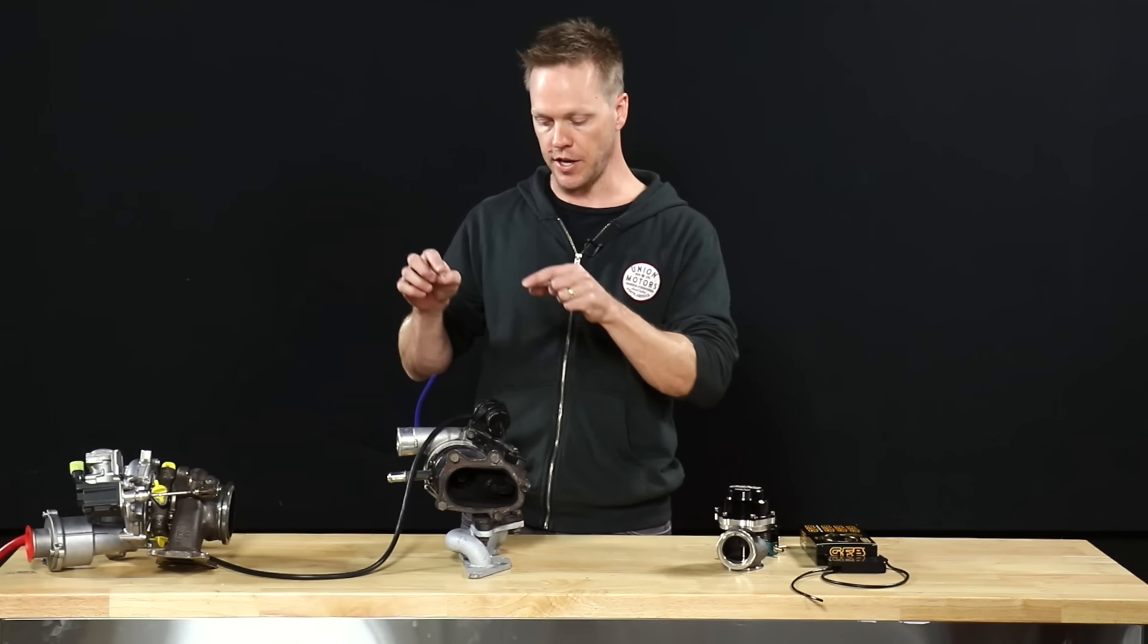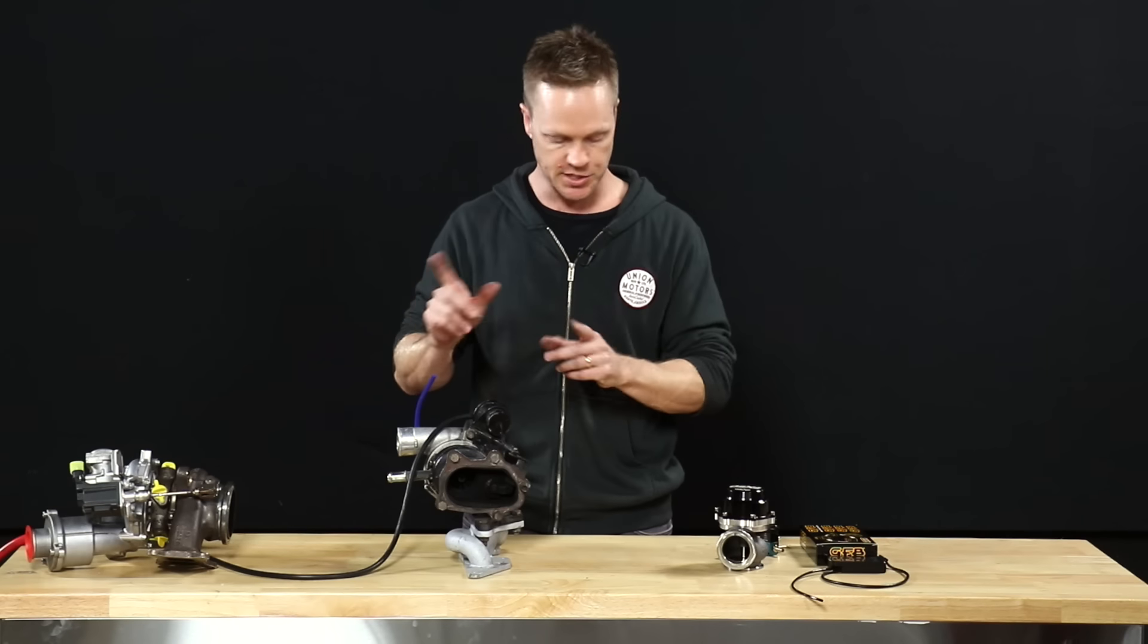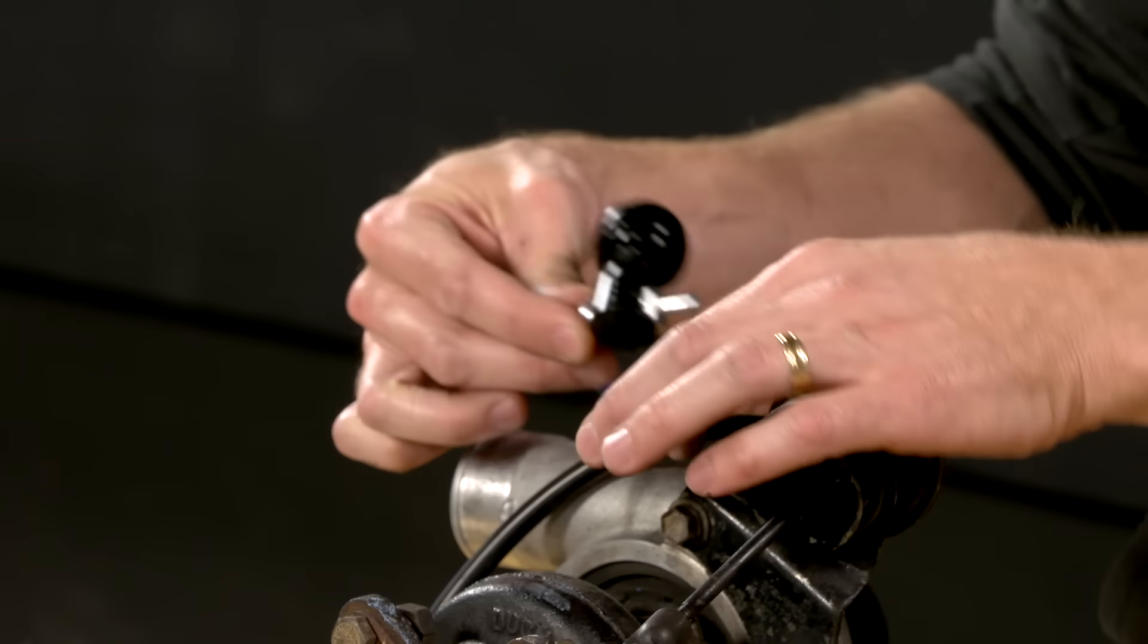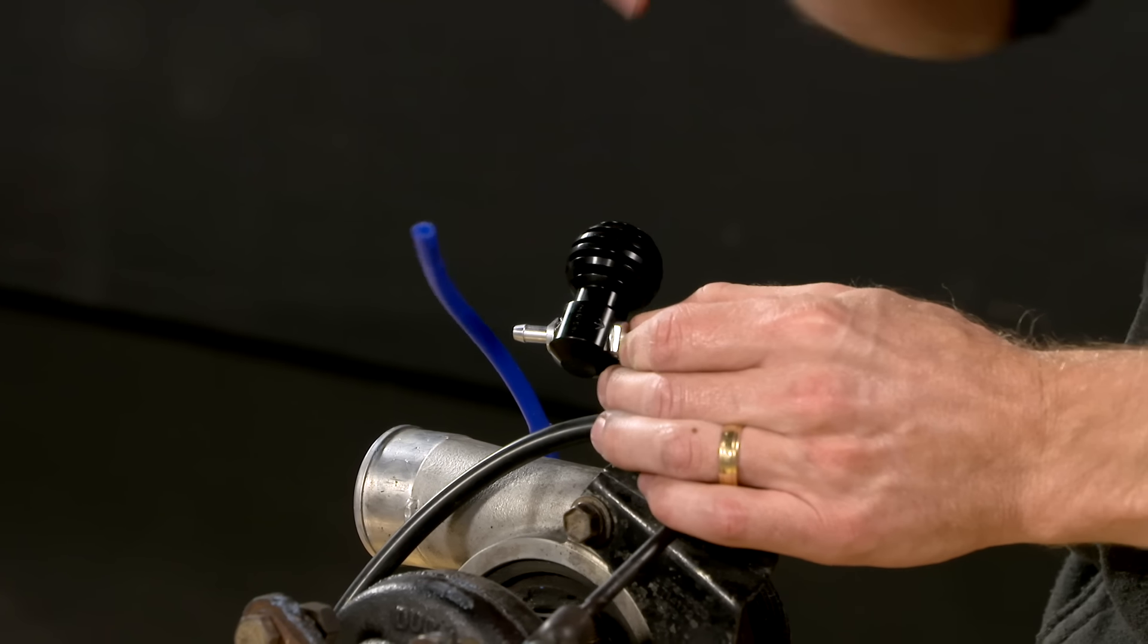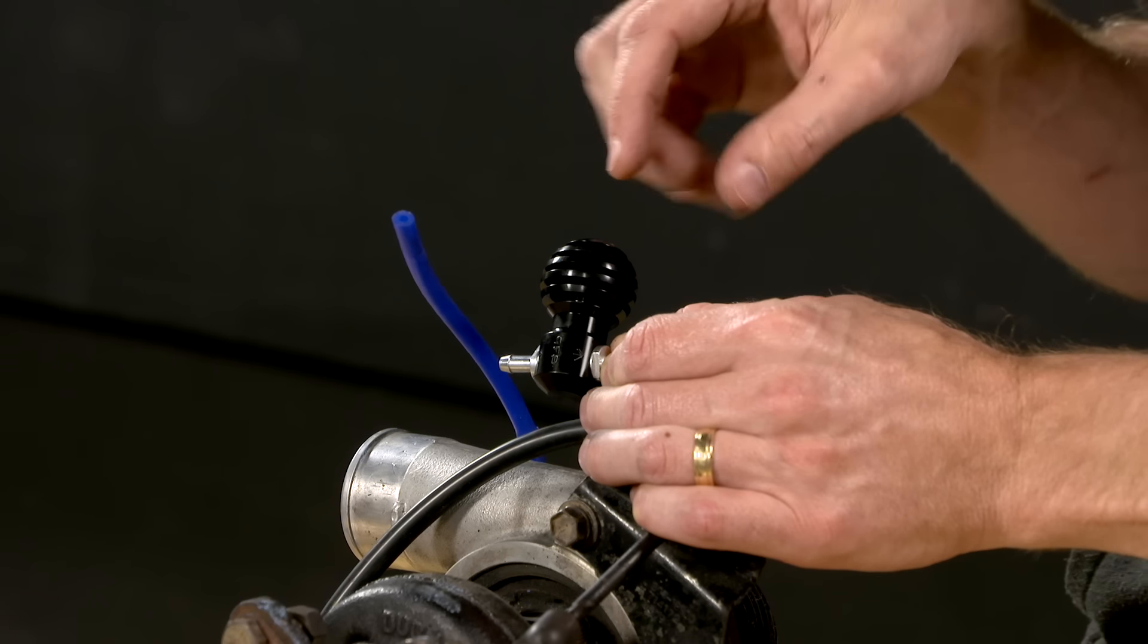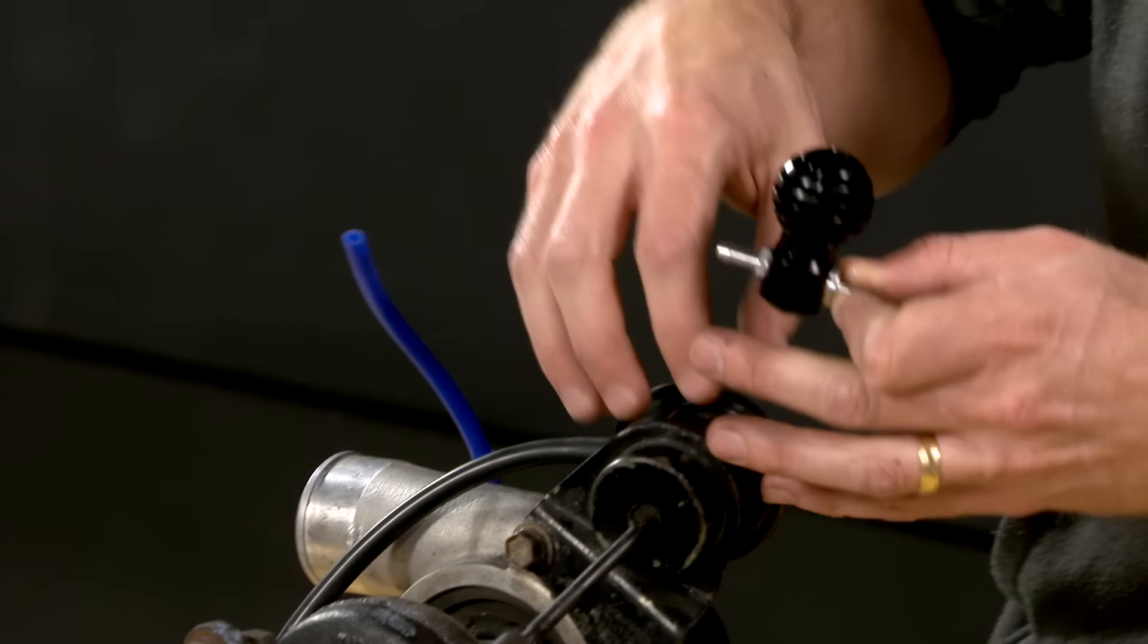So there's a couple of different ways that you can actually modulate the pressure going into the wastegate actuator. The most simple form is just a bleed valve. That simply plugs in there. What this is, is basically a calibrated leak and an adjustable one at that. So you can adjust how much air bleeds out of this line, which reduces the pressure to the actuator.